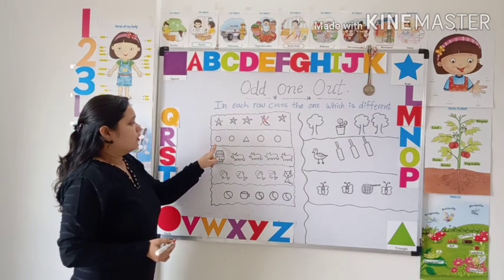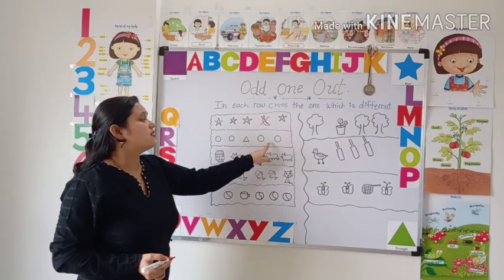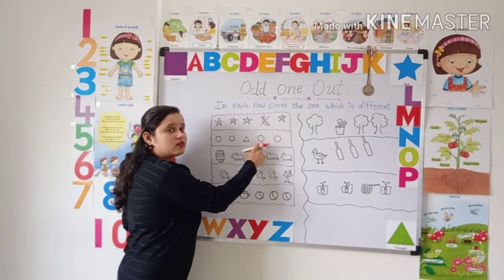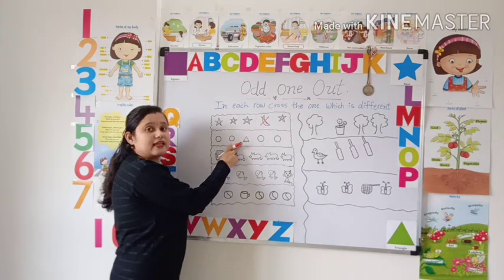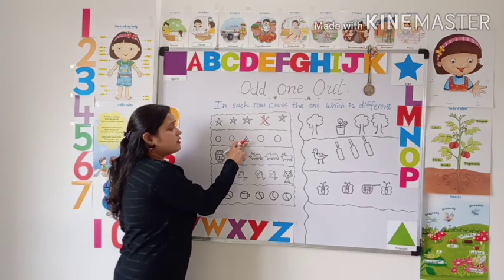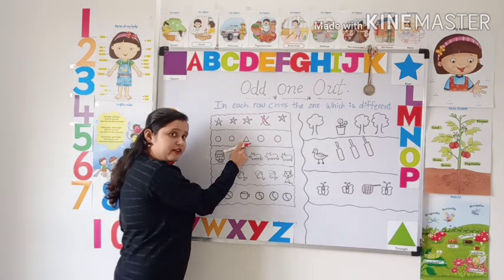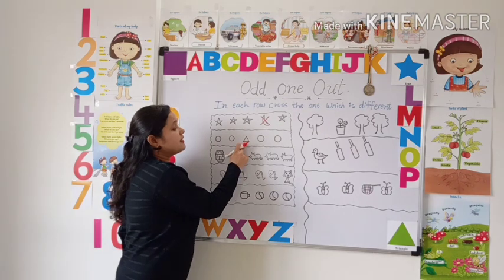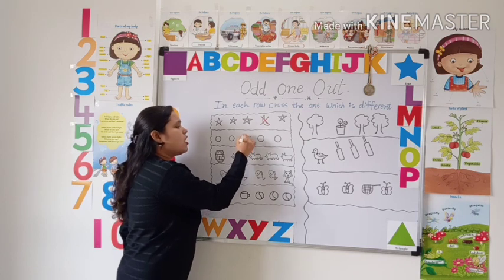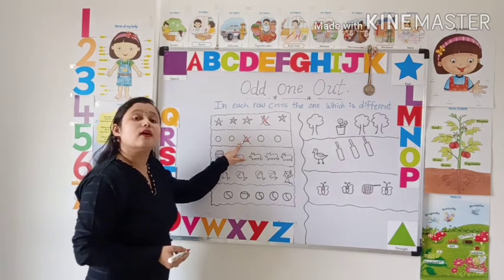Now look here. There are circle shapes. This is circle shape, this is circle shape, this is also circle, this is also circle, but this is a triangle. So this one is different from others. The triangle is a different shape. This is the odd one, so cross the odd one.